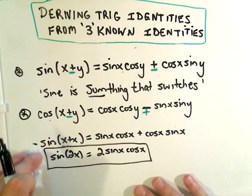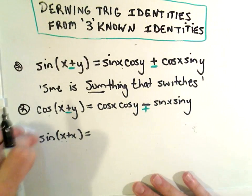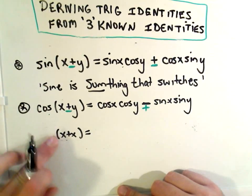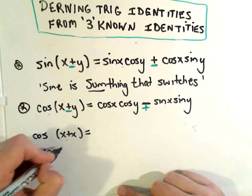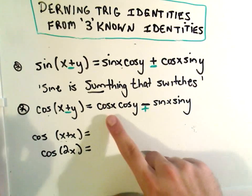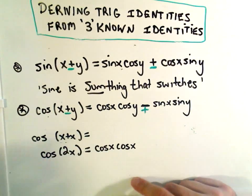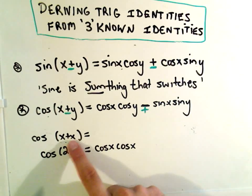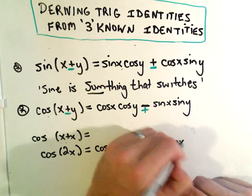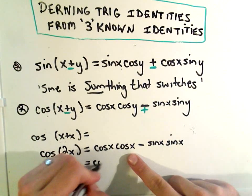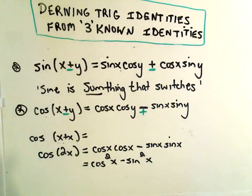We can do the exact same trick with cosine. So it turns out cosine—let's erase this—so cosine of x plus x, or equivalently cosine of 2x. Well, if we use the identity, it says we'll get cosine of x cosine of x, because we're using x plus x, minus sine x sine x. And this gives us the identity cosine squared x minus sine squared x.